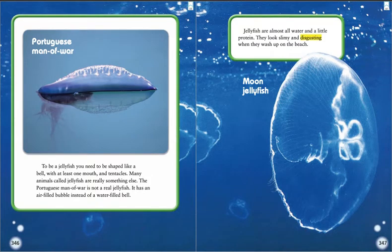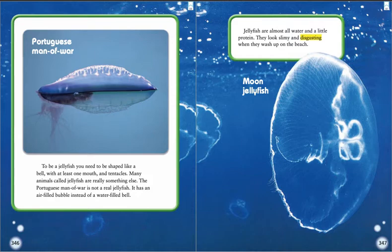To be a jellyfish, you need to be shaped like a bell with at least one mouth and tentacles. Many animals called jellyfish are really something else. The Portuguese man-of-war is not a real jellyfish — it has an air-filled bubble instead of a water-filled bell. This is the Portuguese man-of-war. Jellyfish are almost all water and a little protein. They look slimy and disgusting when they wash up on the beach. This is an example of a moon jellyfish.